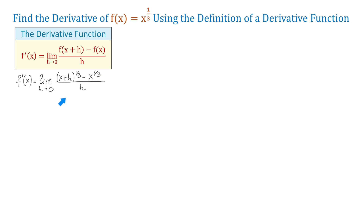Now, to evaluate this limit, at this point we cannot use direct substitution because replacing h with 0 will cause both the numerator and the denominator to be 0. Instead, we have to find a way to simplify the numerator and factor out h. In the numerator, we have a difference of two expressions, each raised to the one-third.